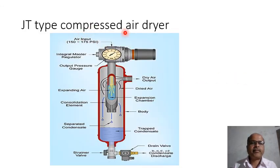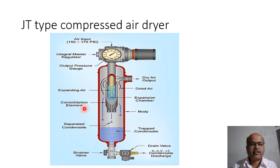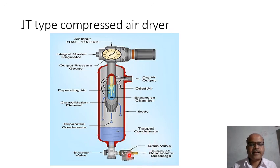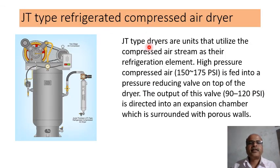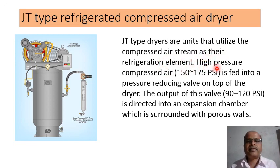GT type compressed air dryer: The diagram shows an integral master regulator, output pressure gauge, expanding air, condensation element, body, separated condensate, trapped condensate, and drain valve. GT type dryers utilize the compressed air stream as their refrigeration element; high-pressure compressed air is fed into the pressure-reducing valve on the top of the dryer.